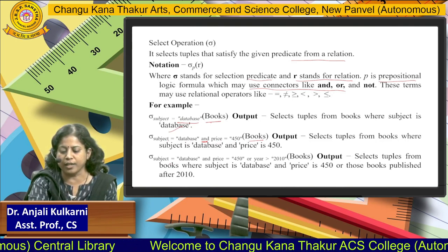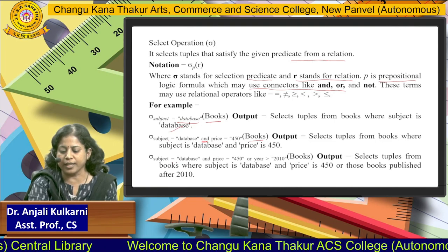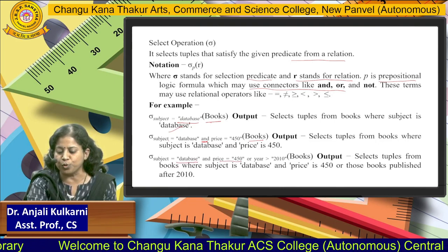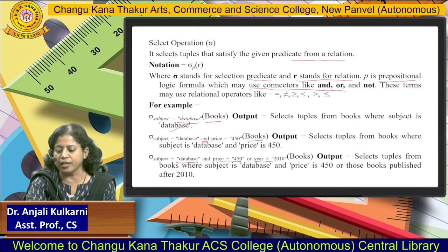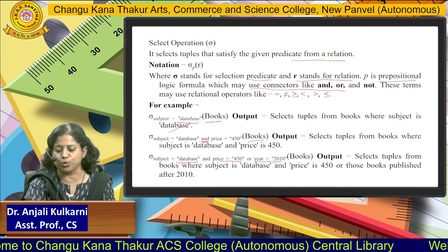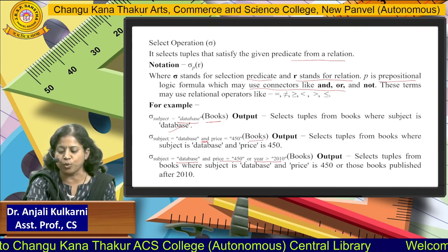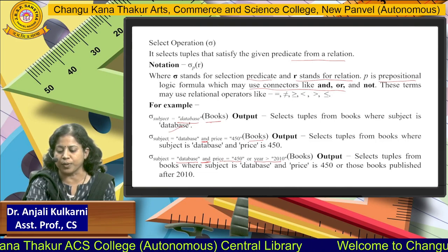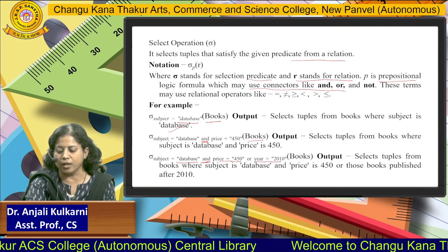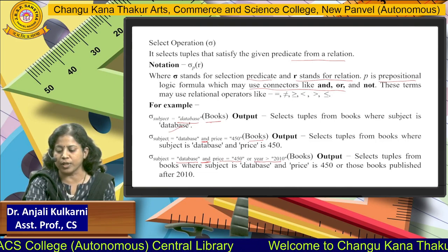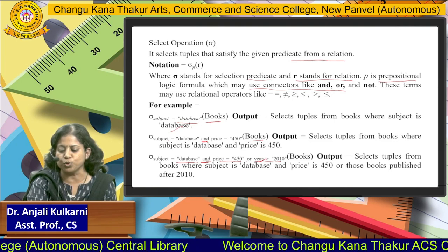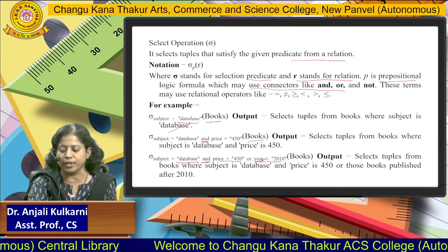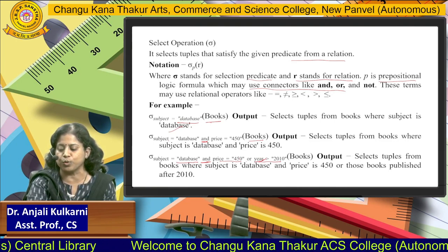We can also write a condition like: subject equal to 'Database' AND price equal to 450, OR year greater than 2010. Here AND means both conditions must be satisfied, while OR means either the year is greater than 2010 or subject is 'Database' and price is 450.